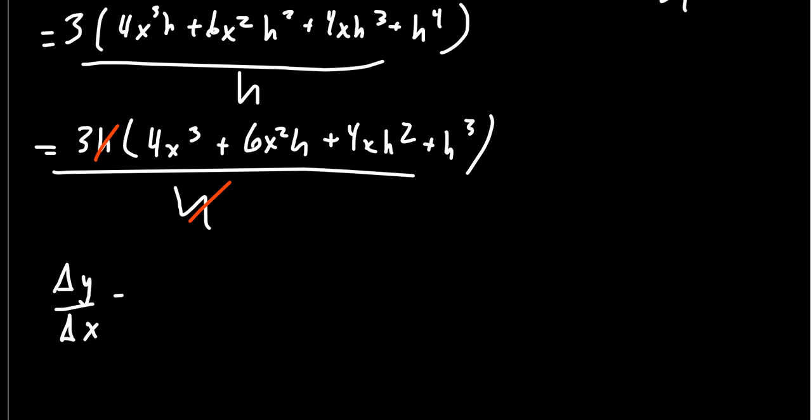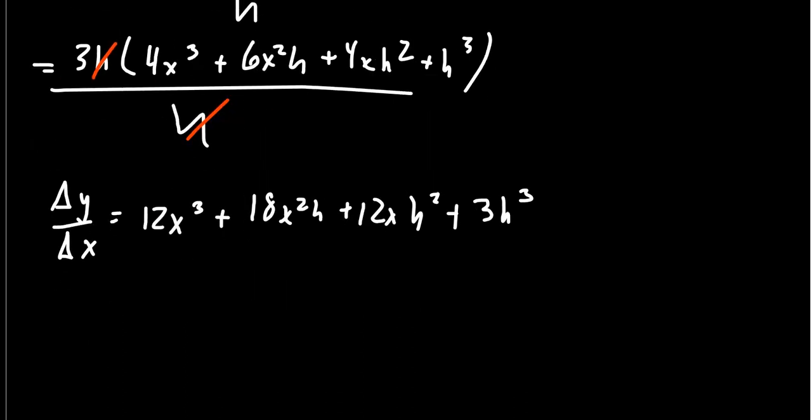I'm going to get 12x³ plus 18x²h plus 12xh² plus 3h³. That gives you the average rate of change. If you're interested in the instantaneous rate of change, this is dy/dx, and this is when h goes to zero. If h goes to zero, then all these things are going to disappear, and you're left with just 12x³. That is the derivative of 3x⁴.